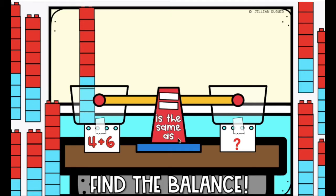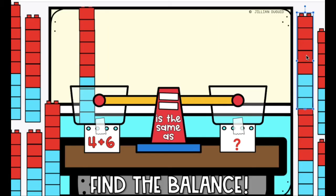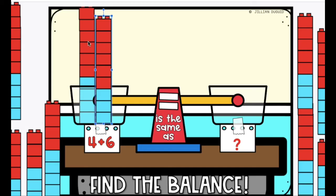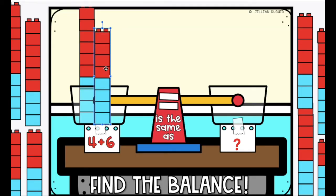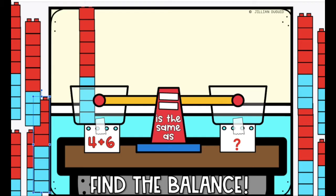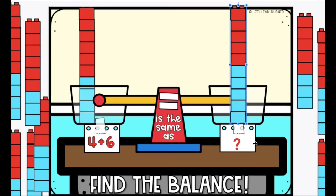You are going to find a balance. 4 plus 6 is the same as. To find the balance, you are going to line up the cube trains to find which one is the same as 4 plus 6. This one is still shorter. Did I find a balance? Yes. When you find a balance, put it on the other side of the balancing scale.